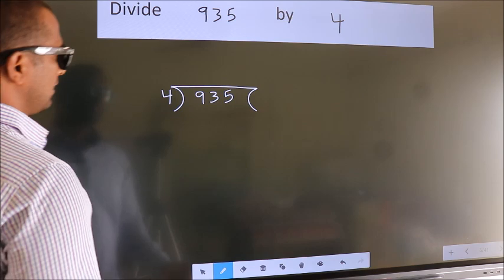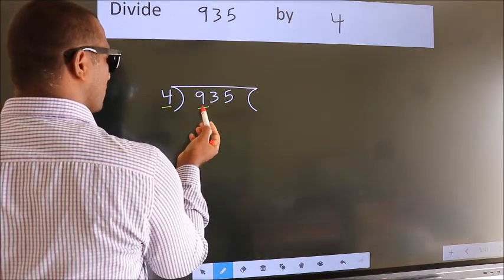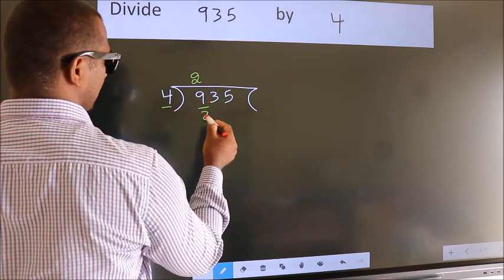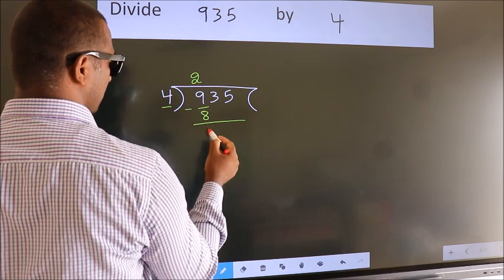Next. Here we have 9, here 4. A number close to 9 in 4 table is 4 2s 8. Now we should subtract. We get 1.